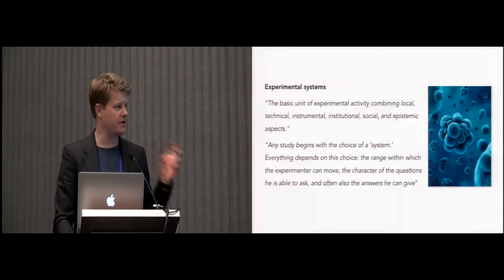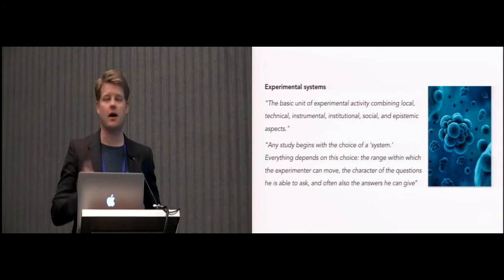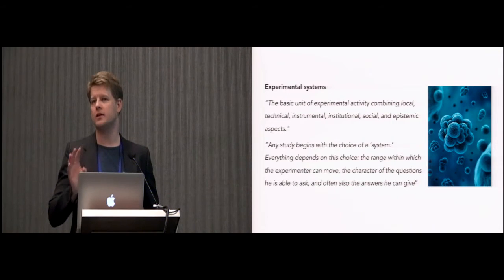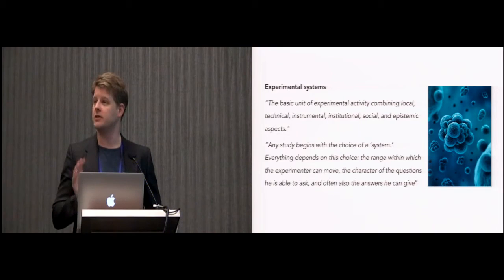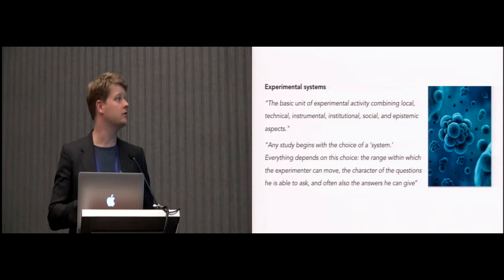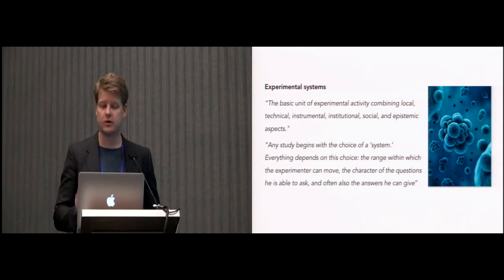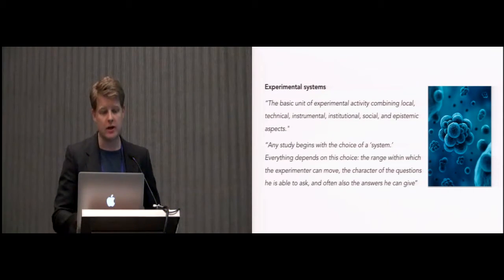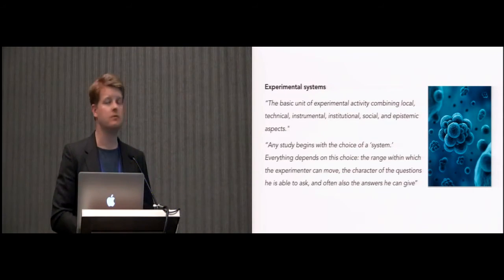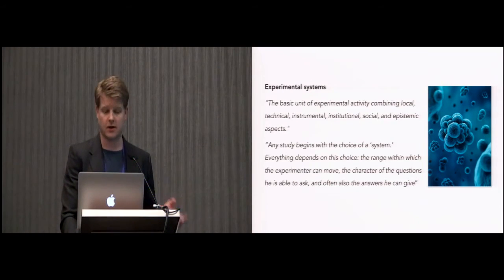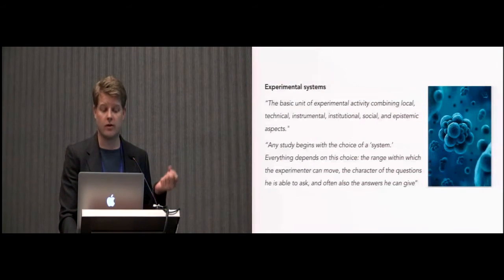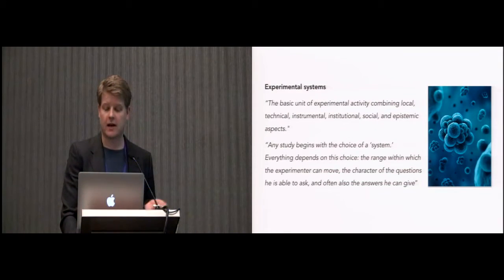And the particular concept, the main concept that I look at in this note, is Rheinberger's notion of experimental systems. And he has a quite holistic understanding of what an experimental system is. He says it's the basic unit of experimental activity and that it combines local, technical, instrumental, institutional, social, and epistemic aspects. And really, experimental systems are crucial to the way that we do research because any study begins with the choice of a system. Everything depends on this choice. The range within which the experimenter can move, the character of the questions he's able to ask, and often also the answers he can give.